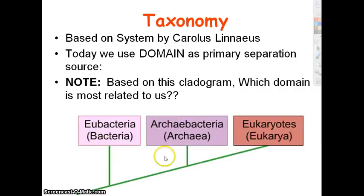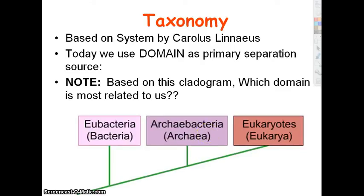We now have domain Eubacteria — the true bacteria — domain Archaea, which is our archaebacteria, and domain Eukarya, which is our eukaryotes. There's some discussion about which is more related to us. Originally you'd think archaebacteria — the ancient ones that live in weird places with no oxygen. But what we've discovered, and there is some controversy, is that archaebacteria have a lot more in common, as far as their organization and the proteins they make, with eukaryotic cells than the eubacteria do.